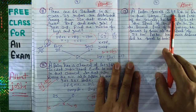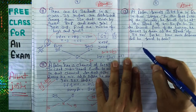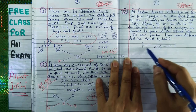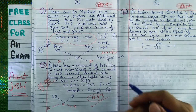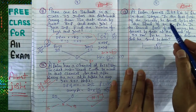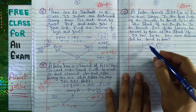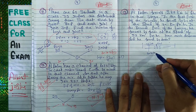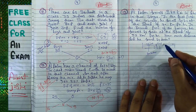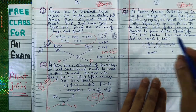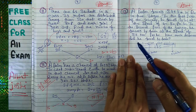In the third question, a person travels 285 kilometers in 6 hours in two stages. In the first part, he travels by bus at a speed of 40 kilometers per hour. In the second part, he travels by train at a speed of 55 kilometers per hour. How much distance did he travel by train?